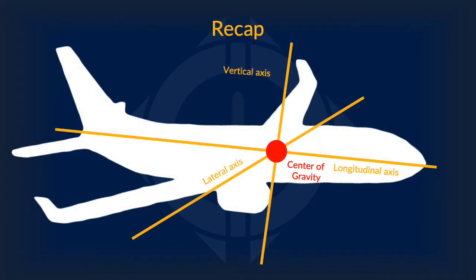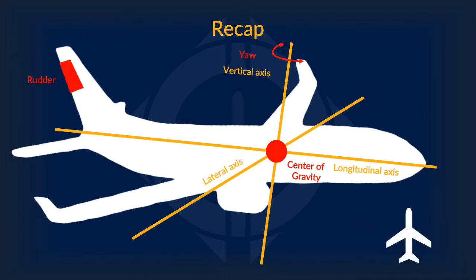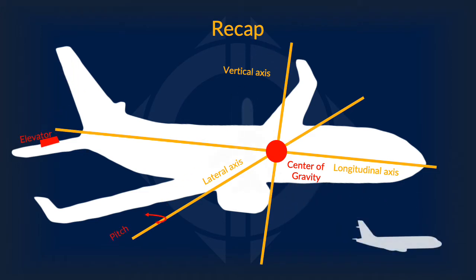Let's begin with a recap on the axis of rotation. Here is the master sheet that we had from our last video. Remember that each axis passes through the center of gravity. Rotation about the longitudinal axis is known as rolling, and can be controlled through the ailerons. Rotation about the vertical axis is called yaw, and is controlled by the rudder. Rotation about the lateral axis is called pitch, and is controlled by the elevator.